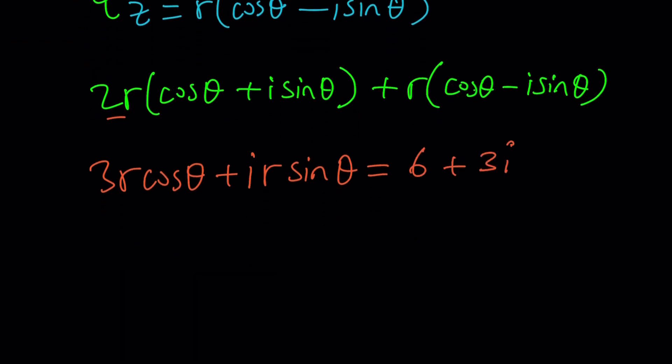And this is equal to 6 plus 3i. Now how do you set it up? Well, the real part is 3r cosine theta. So this equals 6, which means r cosine theta is equal to 2. And this is supposed to equal 3. r sine theta is equal to 3. So how do you find Z from here?